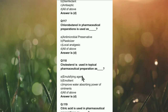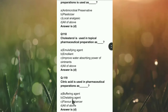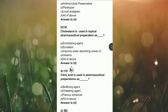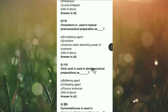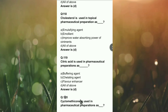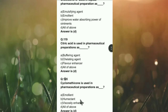Question 118: Cholesterol is used in topical pharmaceutical preparations as emulsifying agent, emollient, to improve water absorbing power of an ointment, or all of the above? Right answer is D. Question 119: Citric acid in pharmaceutical products is used as buffering agent, gelating agent, flavor enhancer, or all of the above? Right answer is D — it is used as a buffering agent, gelating agent, and flavor enhancer.